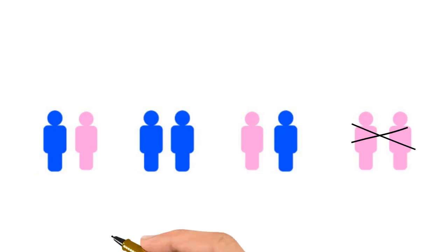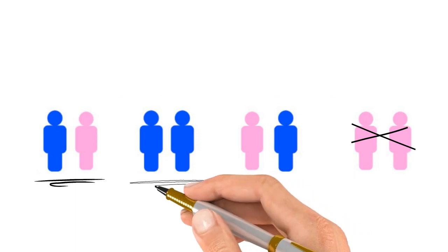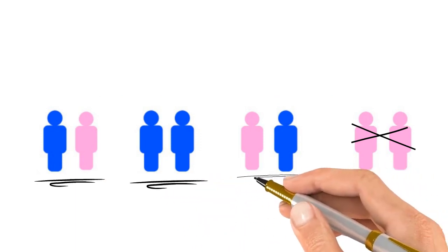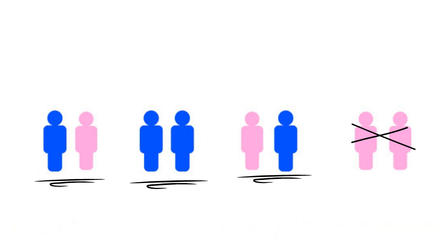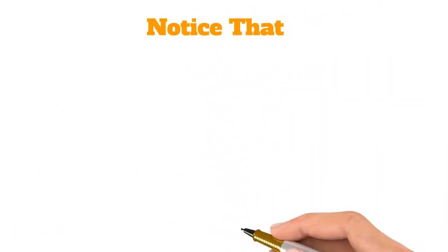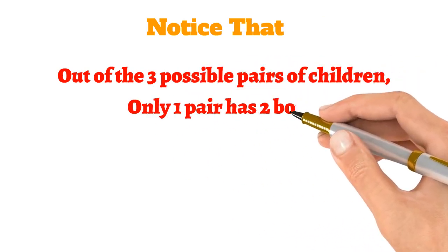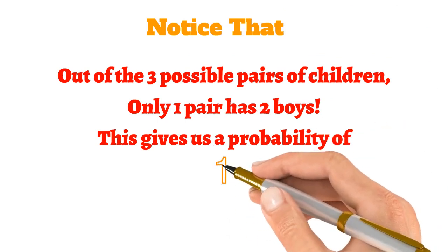Out of our four possible scenarios, we already know one is not possible, so the other three underlined scenarios are possible. Mr. Smith's children could have been any of the underlined ones. Notice that, out of the three possible pairs of children, only one pair has two boys. This gives us a probability of one-third.